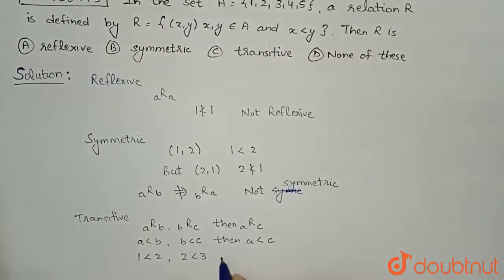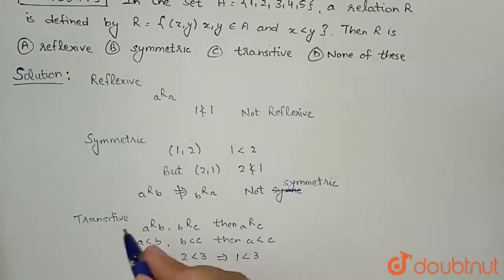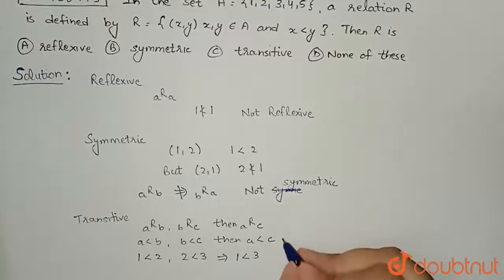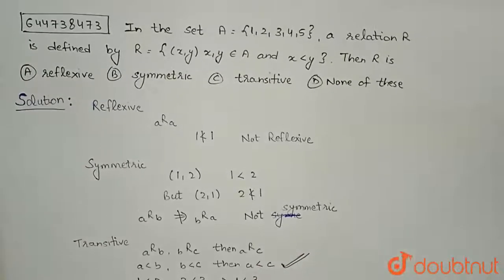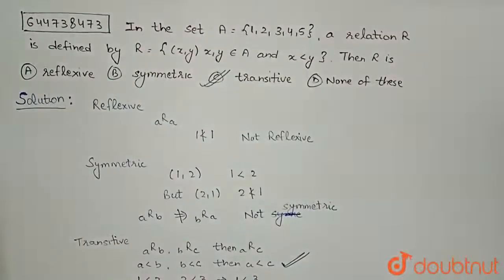2 is less than 3, then definitely it will imply that 1 is less than 3. So that means transitive property is satisfied here. So what will be our answer? That relation R is transitive. That is, option C is the correct answer.